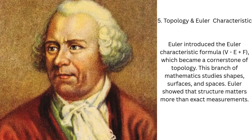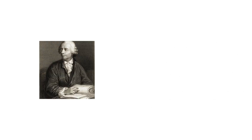Topology and Euler's Characteristic: Euler discovered that for any convex polyhedron, the number of vertices minus edges plus faces is always two. This simple formula led to the field of topology, which studies properties preserved under stretching or bending. Topology is now used in computer graphics, biology, and even cosmology. Euler's work proved that abstract mathematical relationships could reveal hidden truths about shapes and spaces. By focusing on connections rather than distances, he opened a whole new area of mathematics where geometry became a tool that informs modern science and technology.